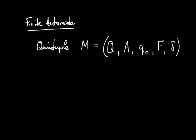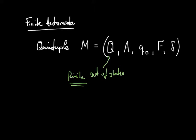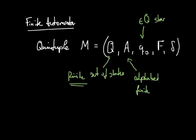A finite automaton mathematically is defined as a quintuple M. This quintuple M consists of five entries: Q, that is a finite set of states; A, an alphabet, which we can also assume is finite; q₀, an element of Q, which is the starting or initial state; and F, a subset of Q, called the set of accepting or final states.